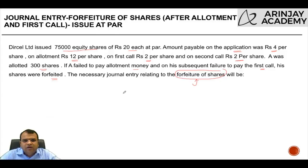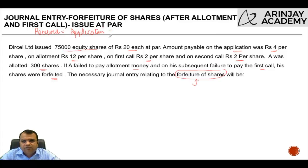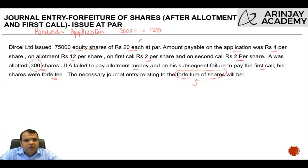When we talk about the forfeiture of shares, we need to find out what is the amount of money that the company has received. What the company received was the amount at the time of application, which is rupees 4 per share. How many shares did A own? He had 300 shares, so the amount of money received from A on application was 300 into 4, which is rupees 1,200.